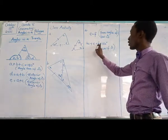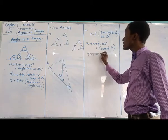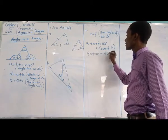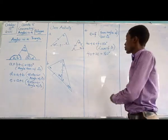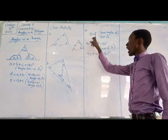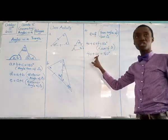Because I know that e is equal to f, I can say here that 40 plus 2e will be equal to 180 degrees. Because this is e, and e is equal to f. So anywhere I have f, I can put e, and I'm going to have e plus e.